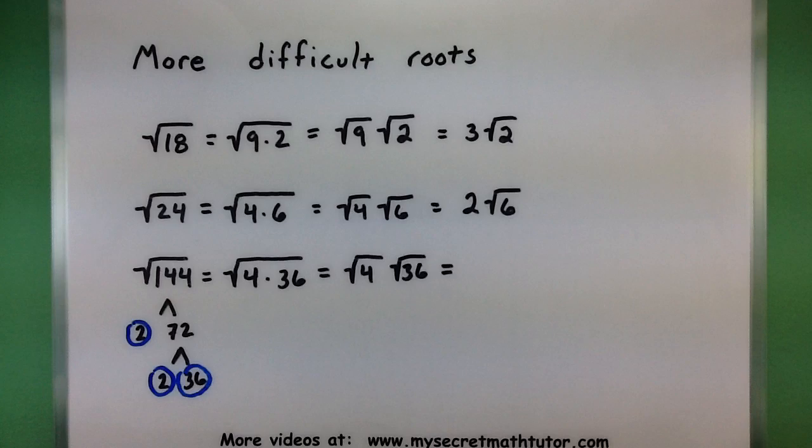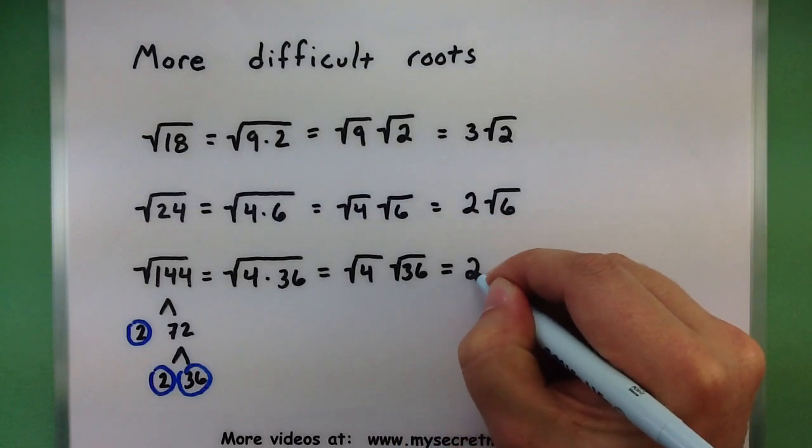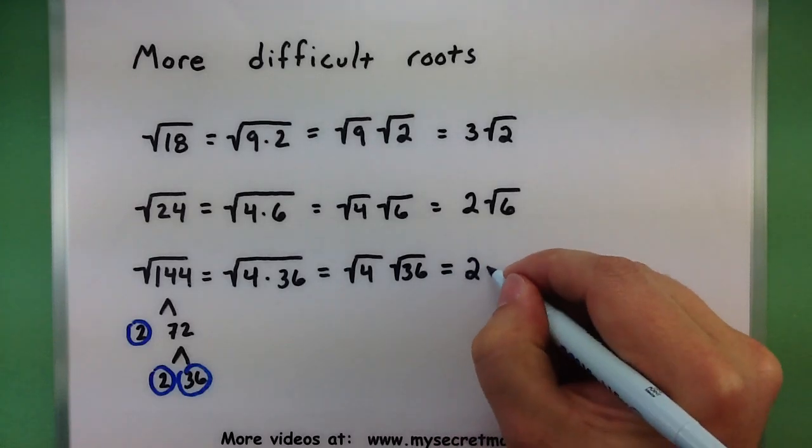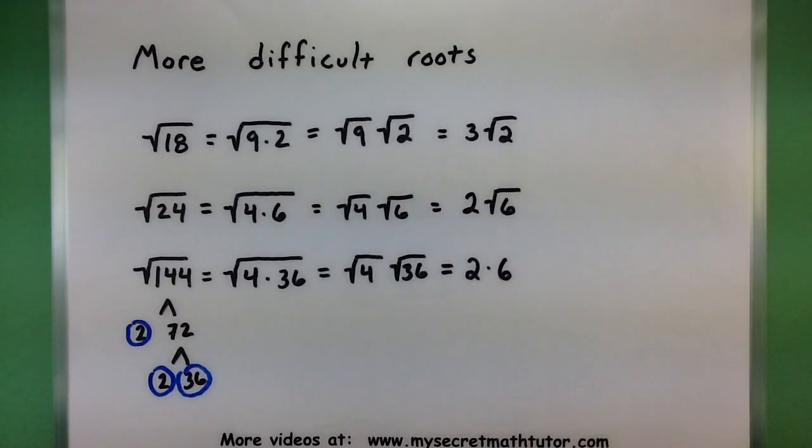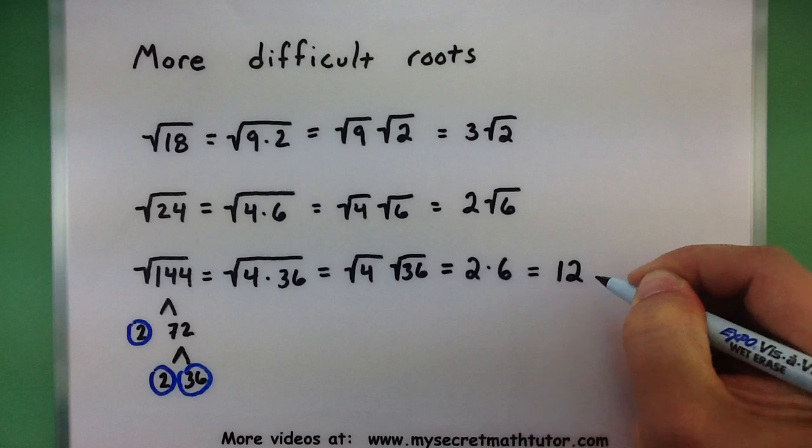And both of these aren't that bad. We've already done the square root of 4 a couple of times. This is just 2. And the square root of 36 is 6. Of course, because 6 times 6 is equal to 36. One last step. 12.